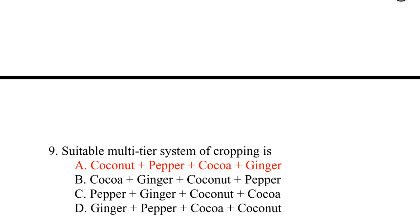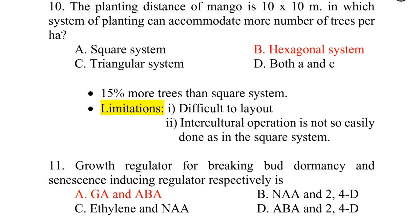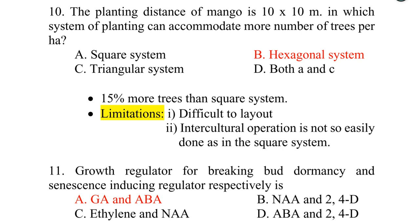The planting distance of mango is 10 × 10 meters. The system of planting that can accommodate more trees per hectare is the hexagonal system — option D. It can accommodate 15% more trees than the square system. However, there are limitations: it is difficult to lay out, and intercultural operations are not as easily done as in the square system.